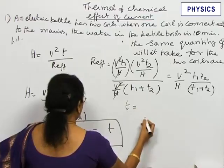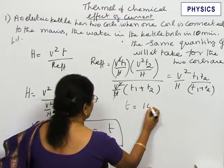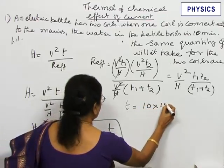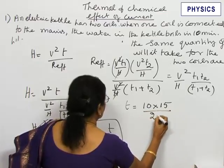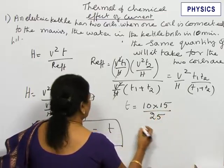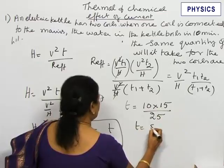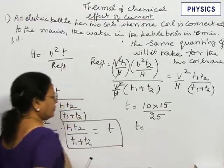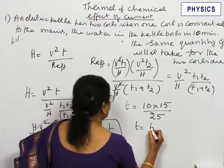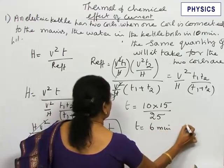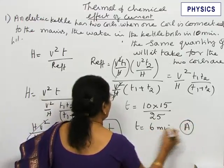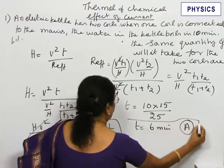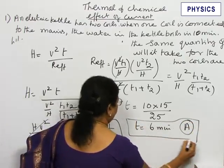Now let us substitute the numbers. T1 is 10 minutes, T2 is 15 minutes. This is 25. So T equal to 6 minutes. Answer A, option A.